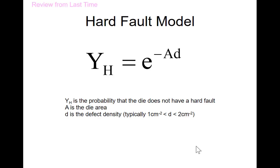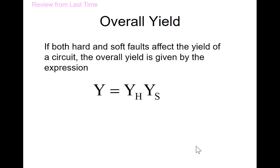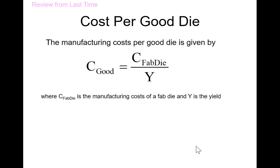Review from last time, we talked about fault modeling. We saw the hard yield was equal to e to the minus AD where A is the die area and D is the defect density. This gives you some good indication as to what it's going to cost to manufacture an IC in volume production. We also talked about soft yield, associated with parametric variations like offset voltage in op amps. There can be a loss of components there that don't meet the specifications. The overall yield is typically the product of the two. The cost per good die was the cost per fab die divided by the overall yield.